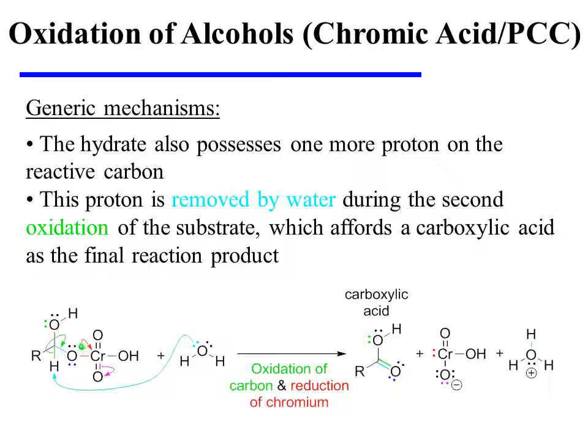The chromium is reduced, and pi electrons are displaced onto oxygen. The product is now a carboxylic acid. That is the final reaction product of a primary alcohol with chromic acid.